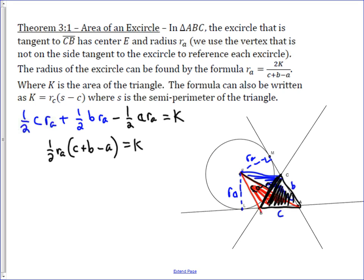And then putting it in our first form here, that form is going to be just multiplying by two and dividing by c plus b minus a. So we get rₐ equals 2K over c plus b minus a. It gives us a nice way to find the radius of the x-circle.